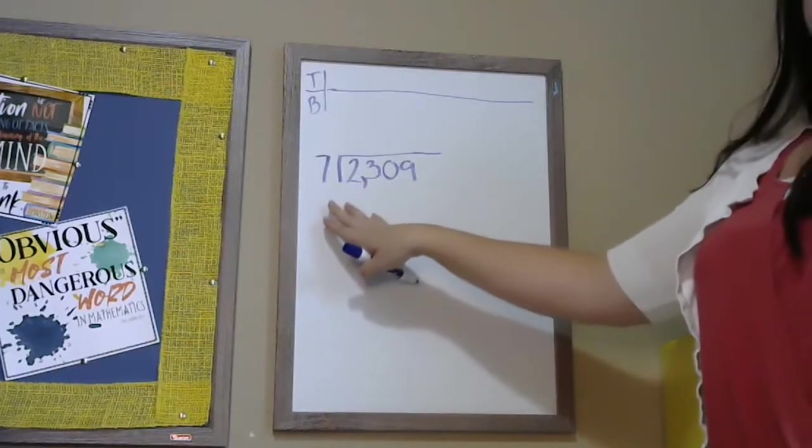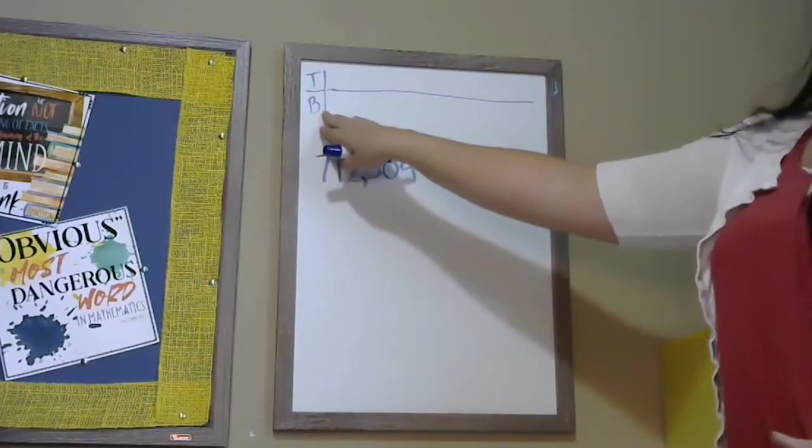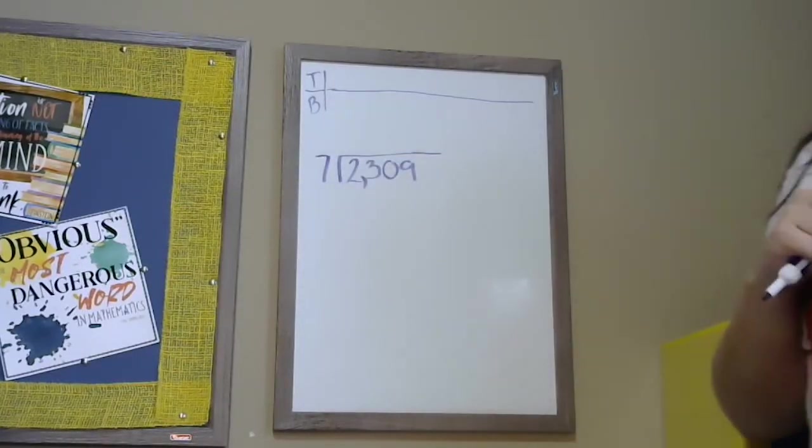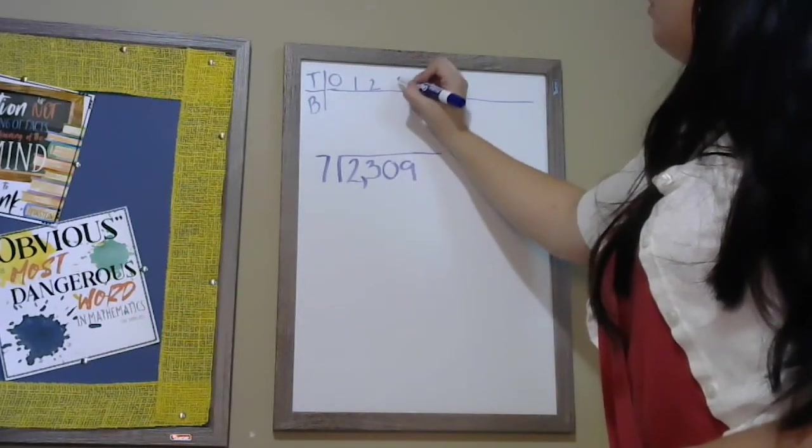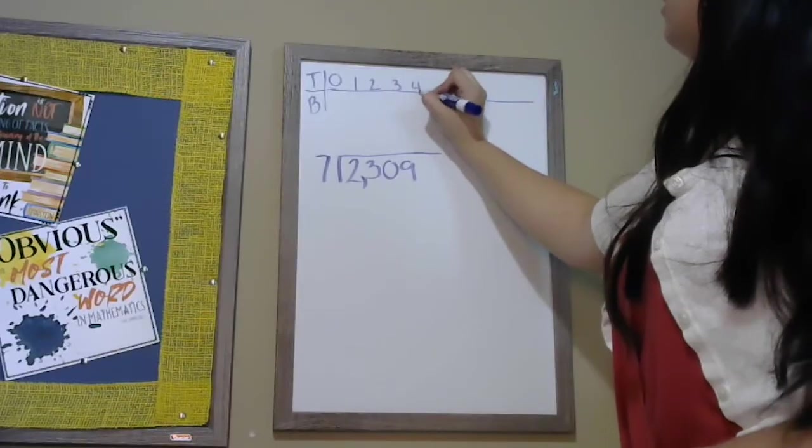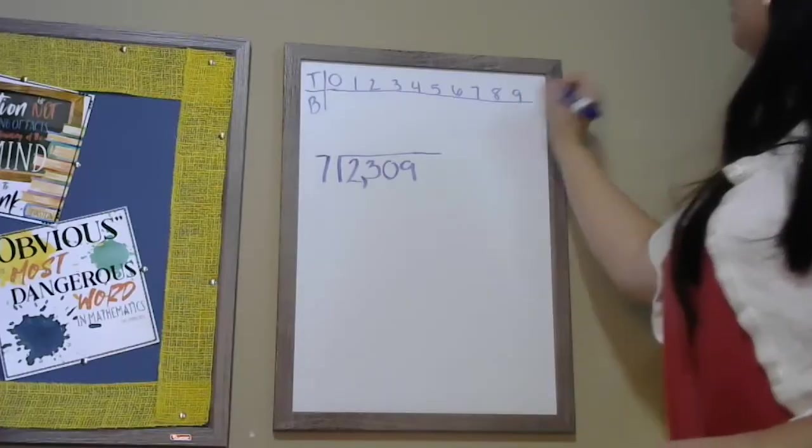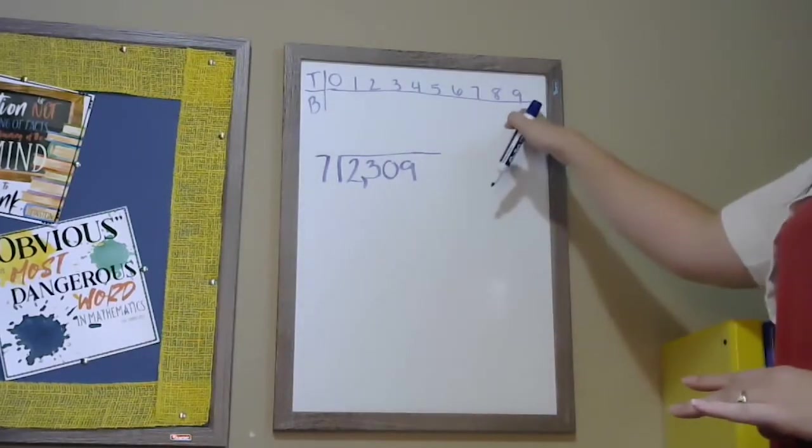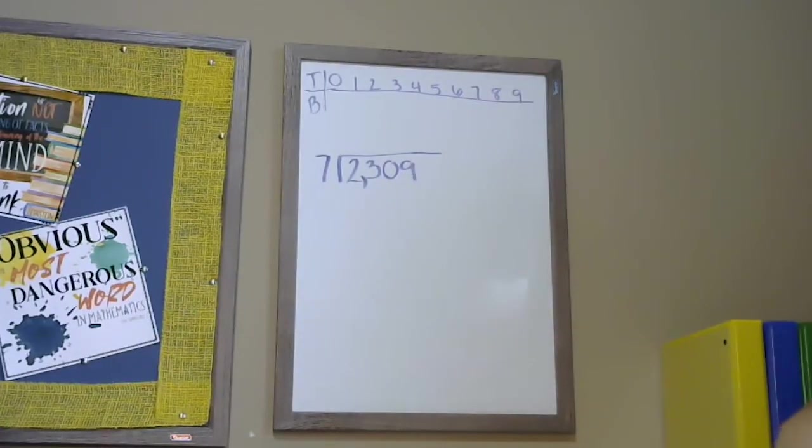So here we have our division problem, 2309 divided by seven. Our first step is to make a table. This is called our tops and bottoms table. On the tops we list all the digits. We begin at zero and we will go all the way to nine. We do not need to list the number 10 because it is not a digit. It's two digits. We've got zero through nine. These are the numbers that will be our quotients or on the top of the division symbol.